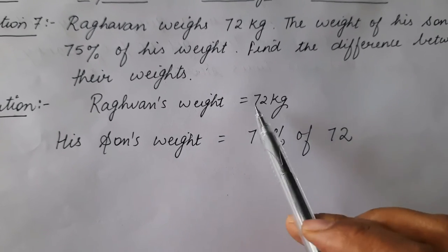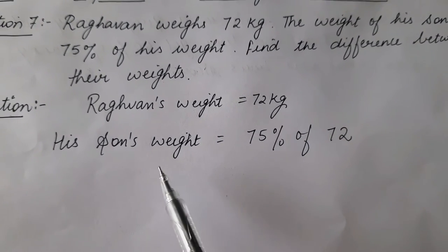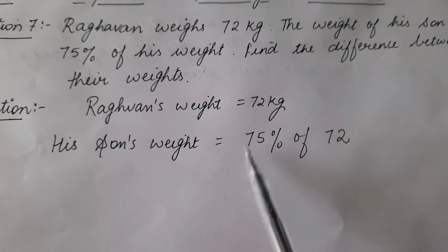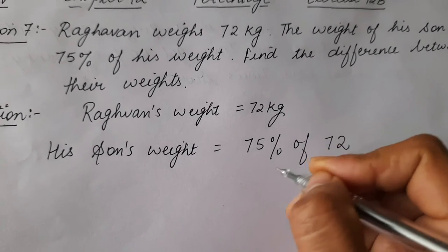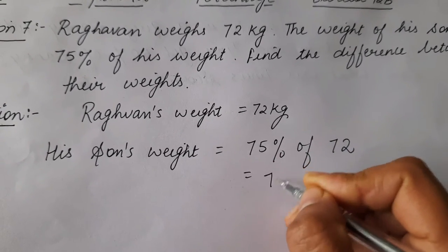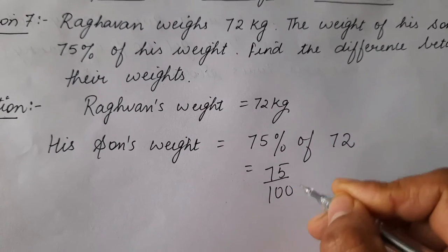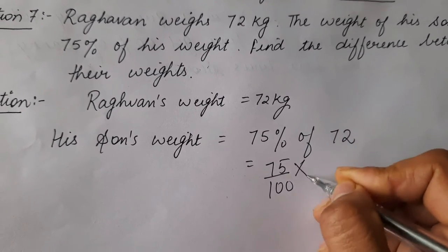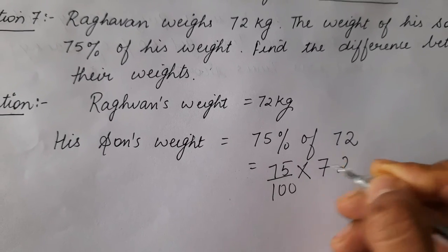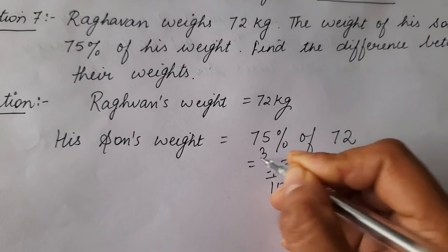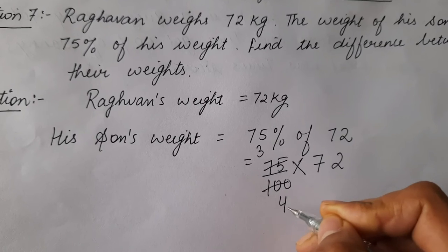See, Raghavan's weight is 72 kg and his son's weight is 75% of 72. 75% of 72 means 75 divided by 100, remove this percent sign and there will be 100 in the denominator, multiply by 72. 25 threes are 75.